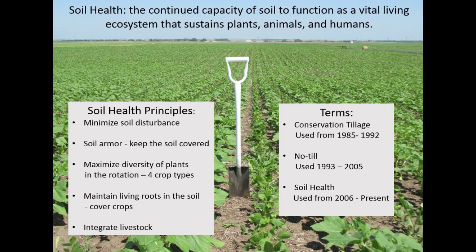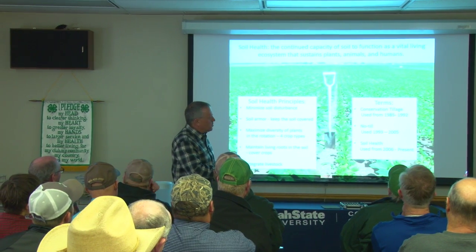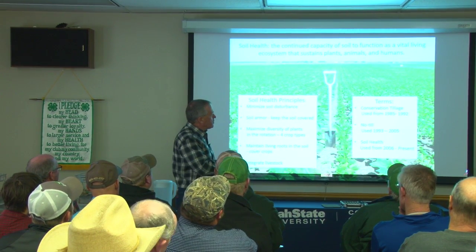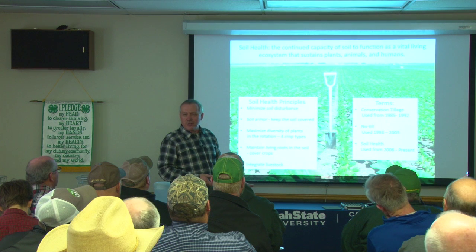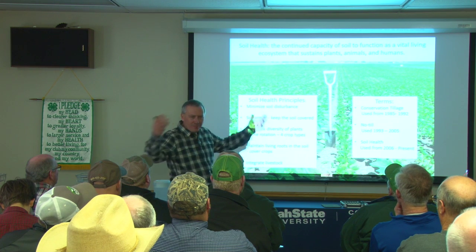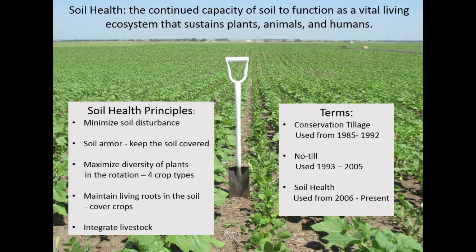Soil health in general is the capacity of the soil to function as a vital living ecosystem, sustaining plants, animals, and humans. Looking at old history: from 1985 to 1992 we used the term 'conservation tillage' — never liked that term because it was always more about tillage than conservation. From 1993 to 2005 we used 'no-till' — always about the opener, not the entire concept. Then we started using 'soil health' in 2006 — that more encompasses the entire system because it's more of a systems approach.